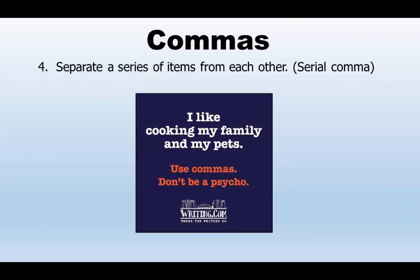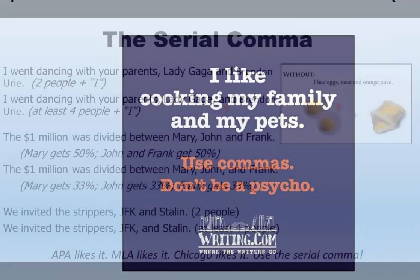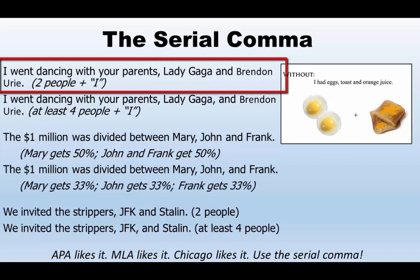Commas can also separate a series of items in a list — that's called a serial comma. In the graphic: 'I like cooking my family and my pets' — another bloodbath due to lack of punctuation. It would be much nicer if it read, 'I like cooking, my family, and my pets.' Notice the difference in meaning in the following examples: 'I went dancing with your parents, Lady Gaga and Brendon Urie.' That one has three people involved — the 'I,' Lady Gaga, and Brendon Urie. That's not a serial comma.